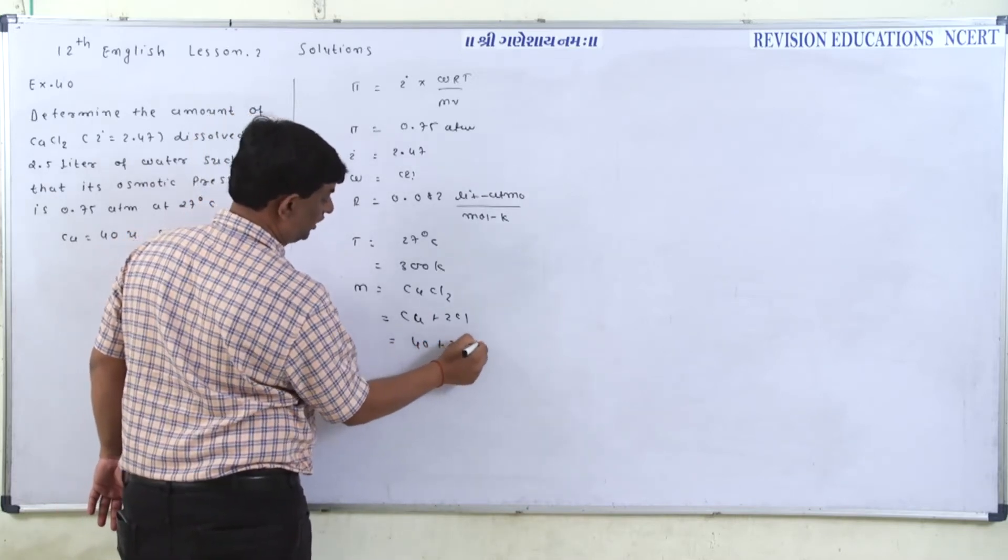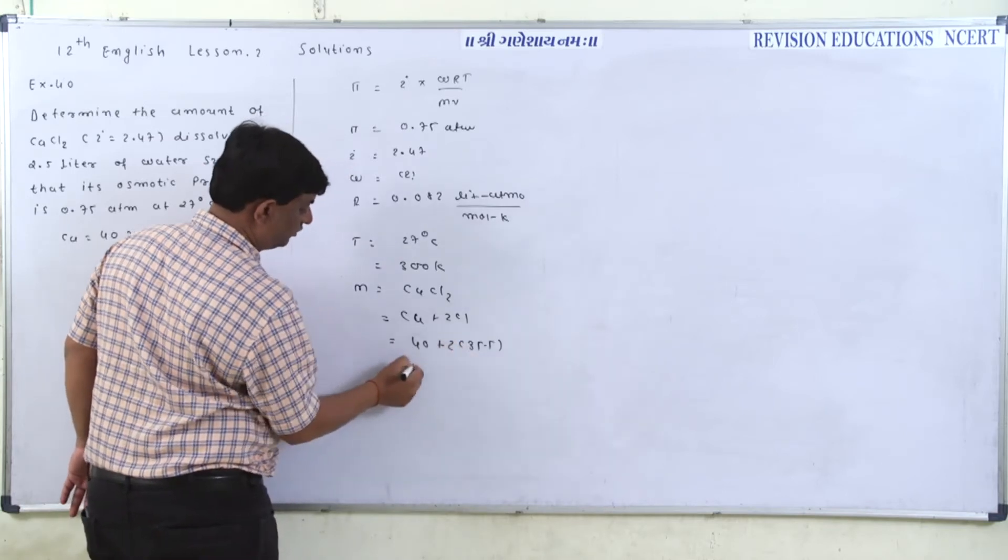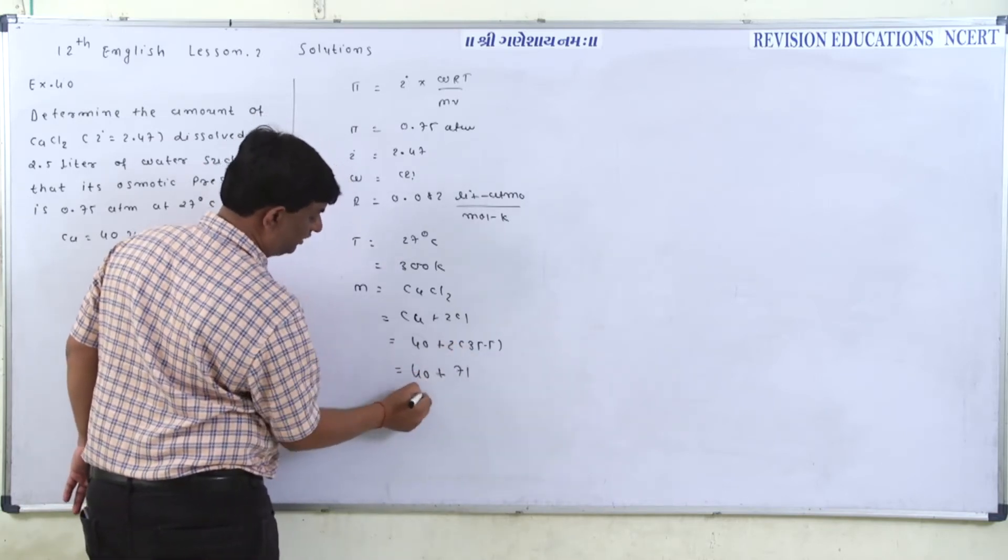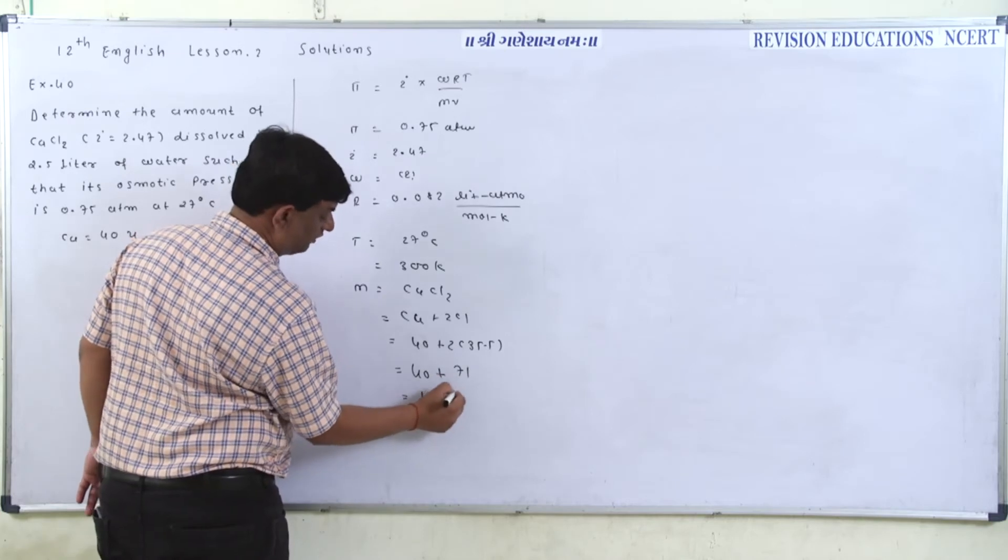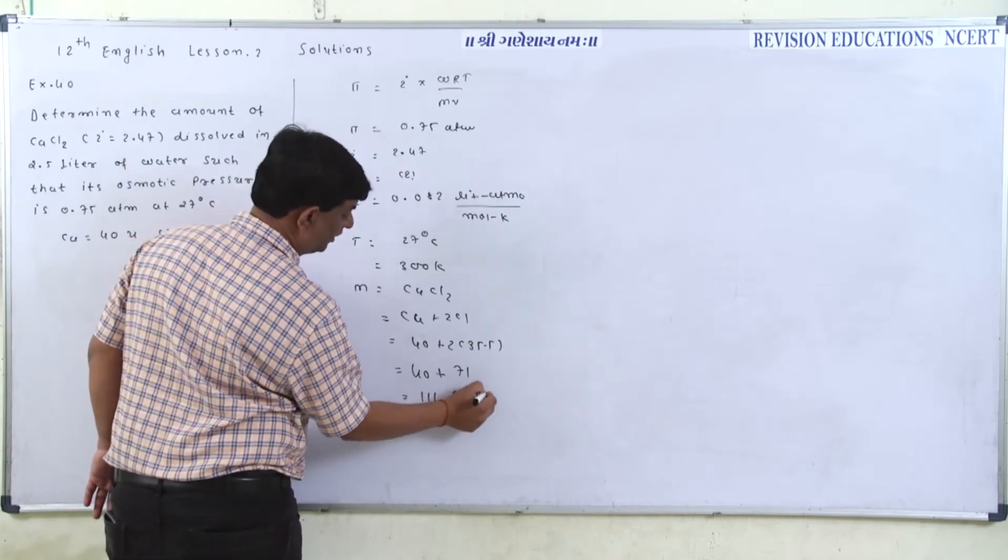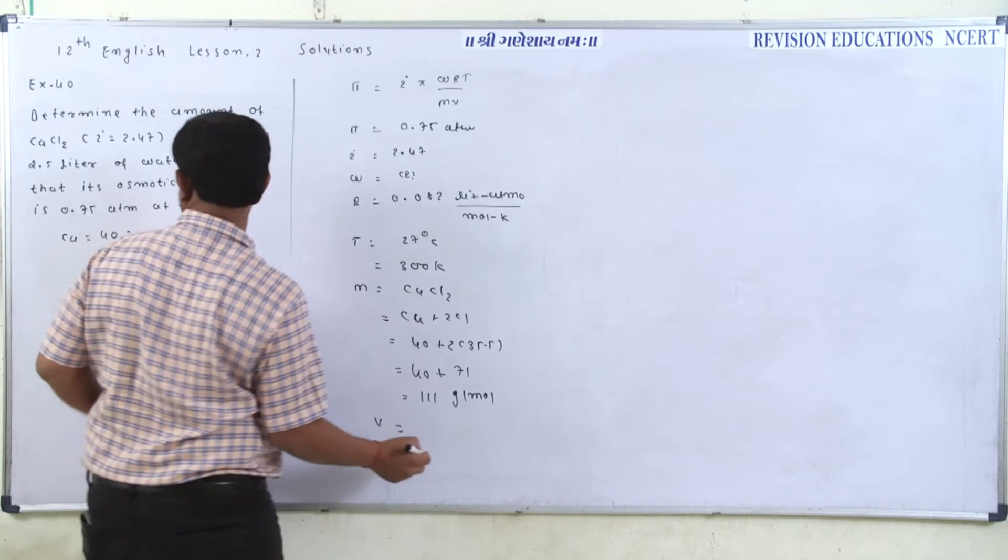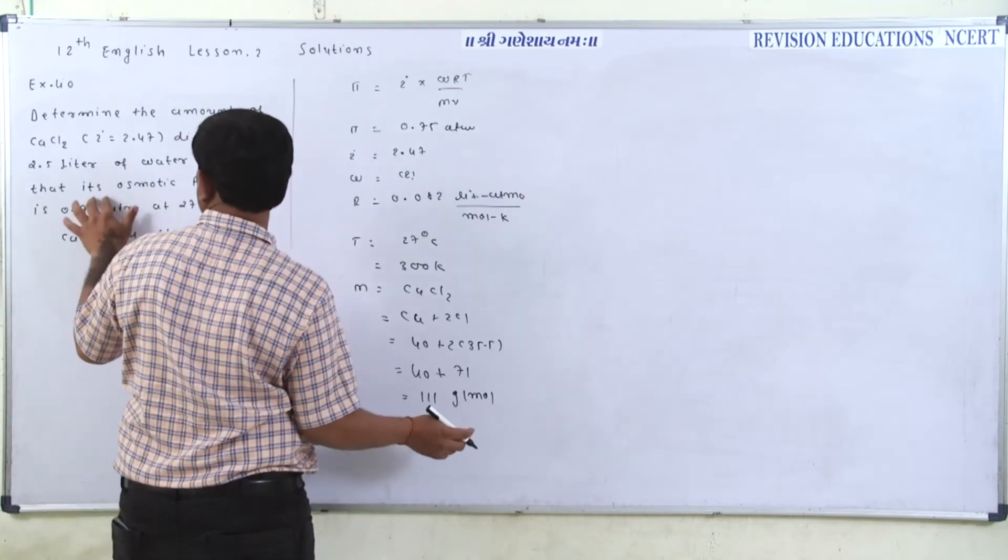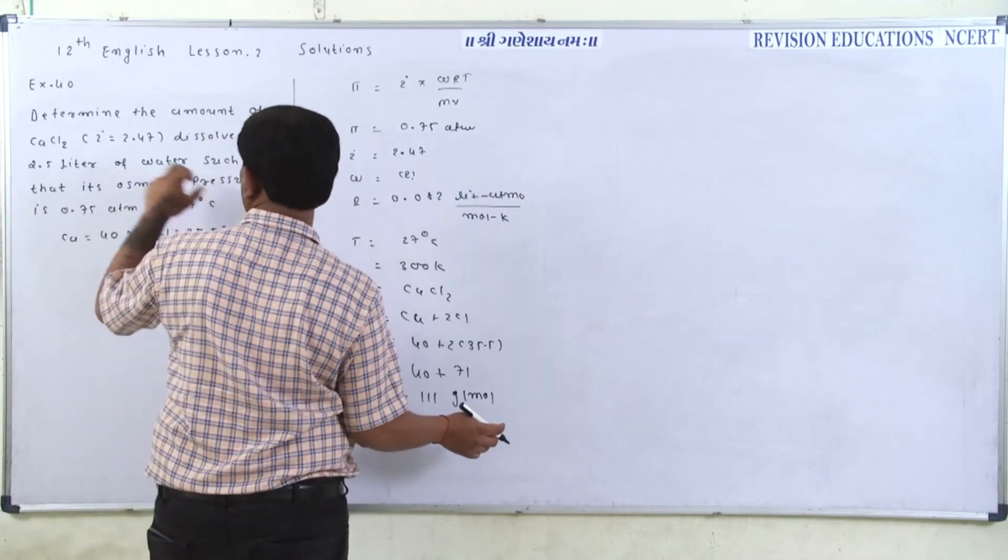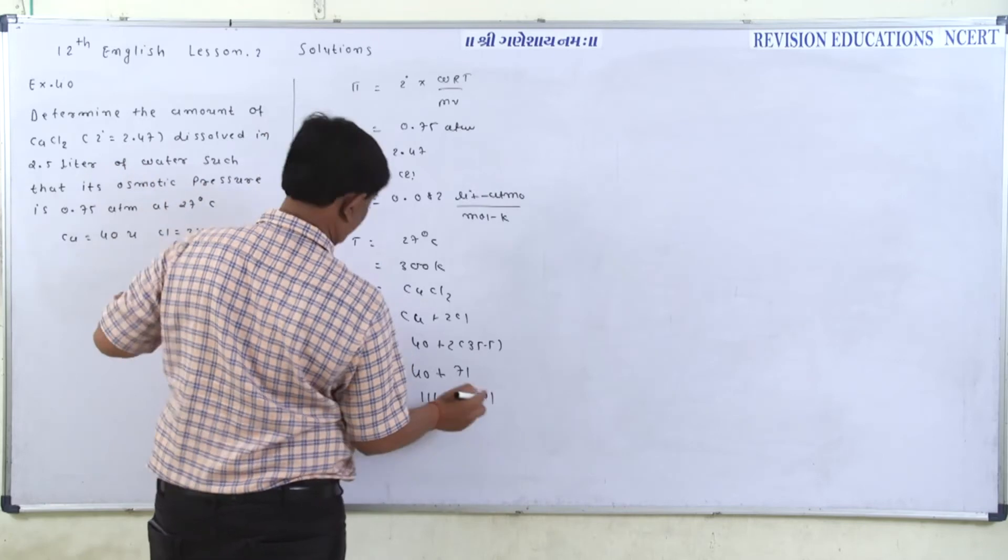2 into 35.5 equals 71. So this is 111 grams per mole, and volume is 2.5 liter.